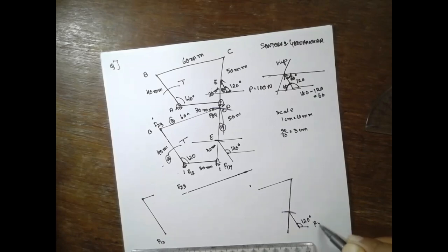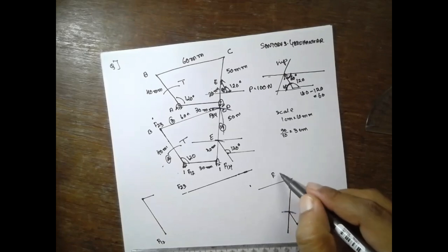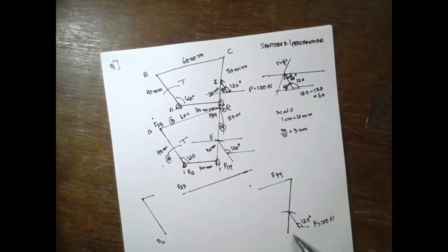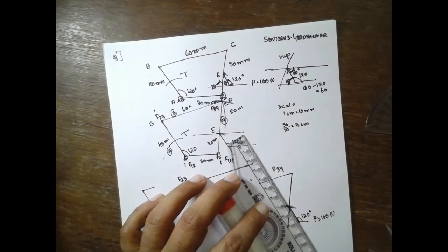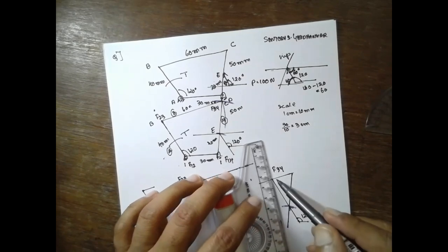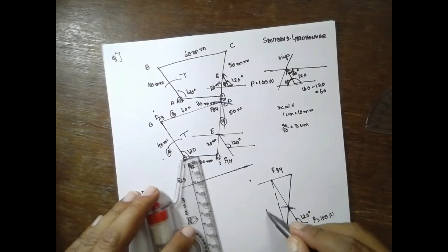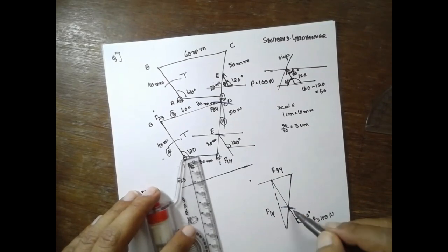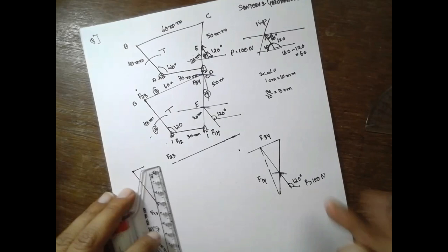The angle is 120 degrees. F is equal to 100 N. This means nothing but F34. This is nothing but F14. Just extend this part till it touches the F34 part, and join this part — this is nothing but F14. This is the force; this is F34. Based on this, you have to draw the force polygon.